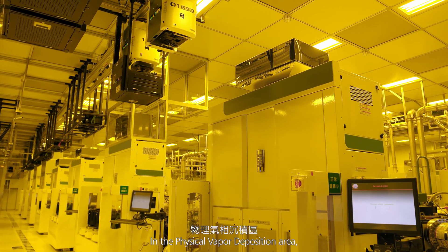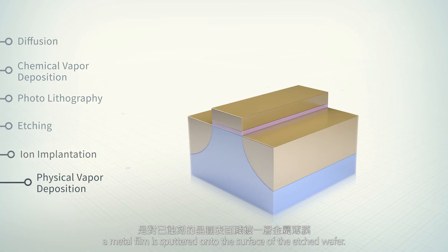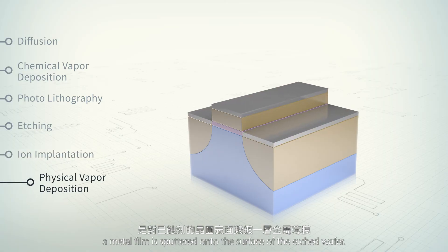In the physical vapor deposition area, a metal film is sputtered onto the surface of the etched wafer.